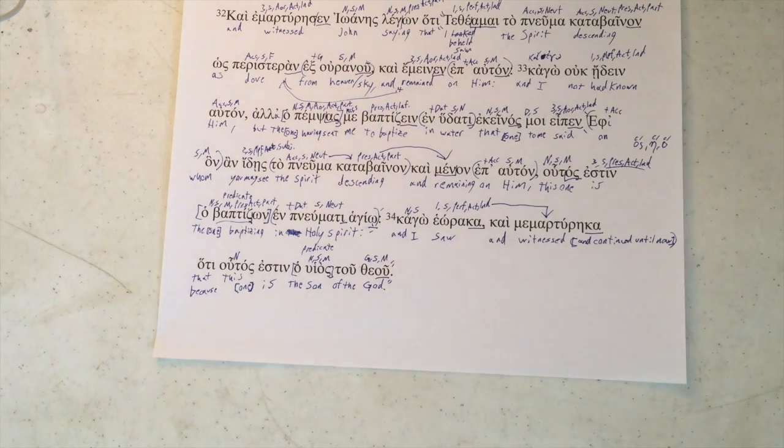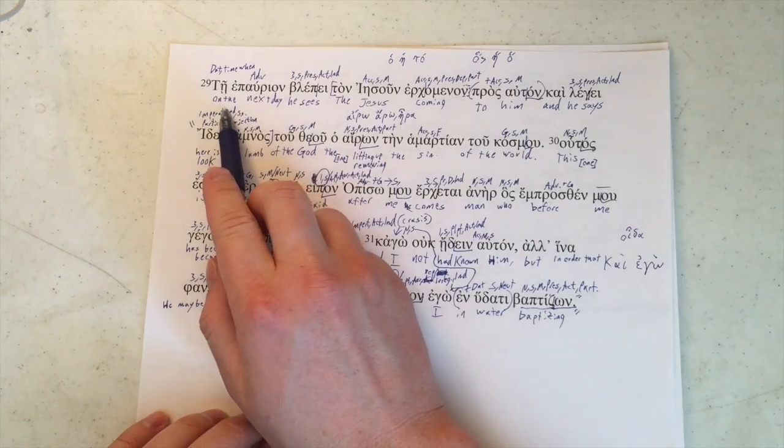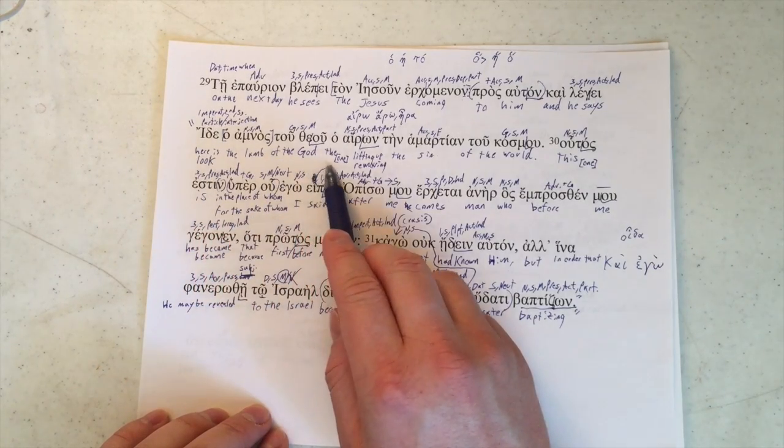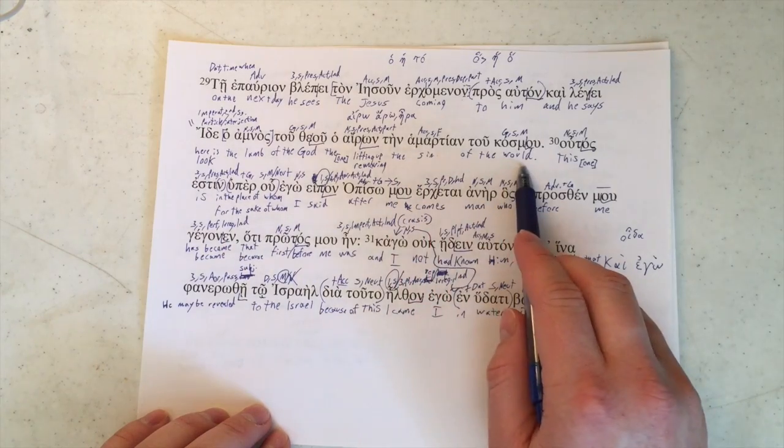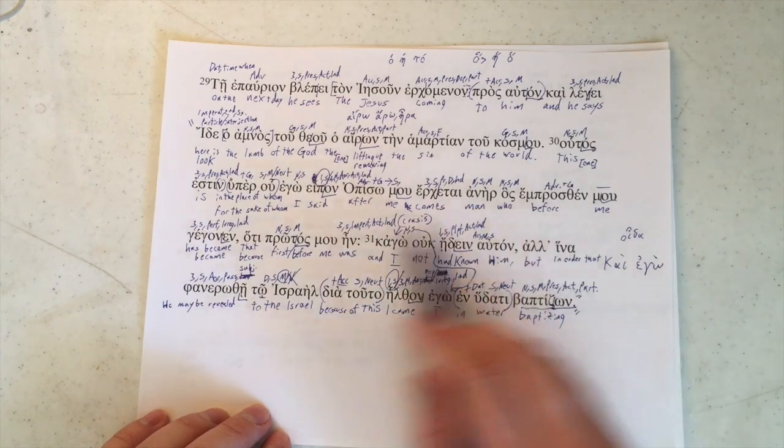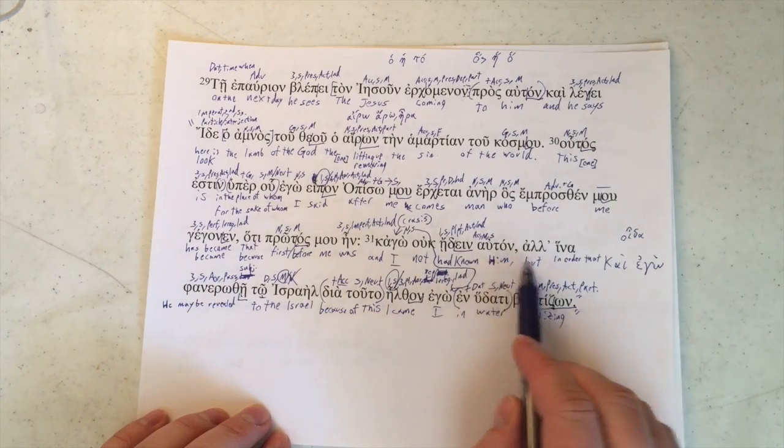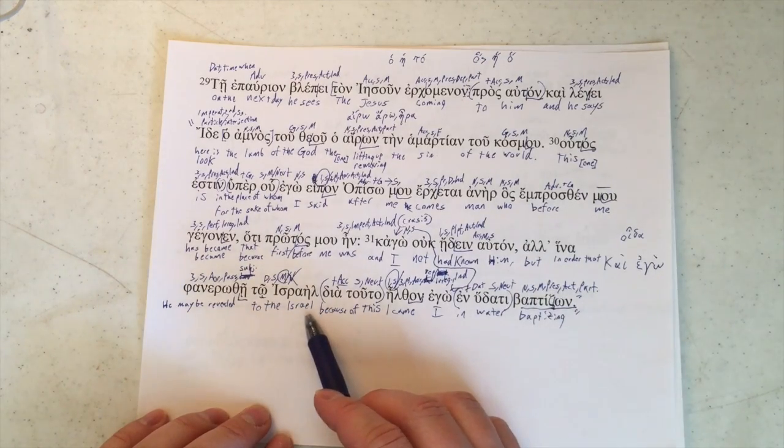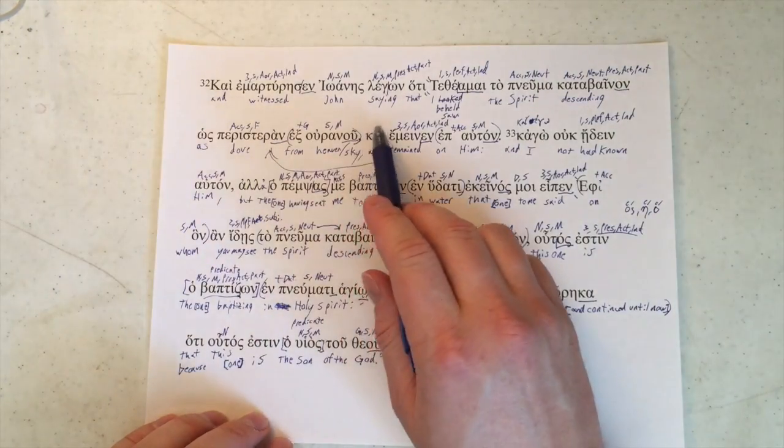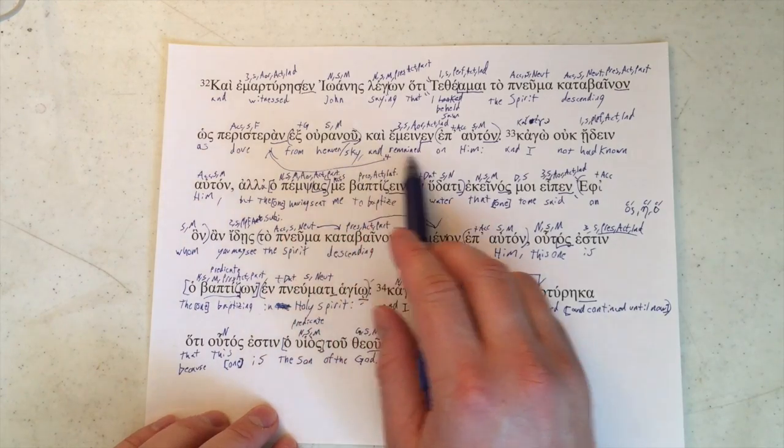All right, now we want to take a look at the greater context. Verse 29 through the end of this passage. On the next day, he sees the Jesus coming to him, and he says, look, or here is the lamb of the god, the one lifting up or removing the sin of the world. This one is for the sake of whom I said, after me comes man who before me became, because he was before me. And I had not known him, but in order that he may be revealed to the Israel, because of this I came in water baptizing. And John witnessed, saying that I beheld, or I saw the spirit descending as dove from heaven, and it remained on him.